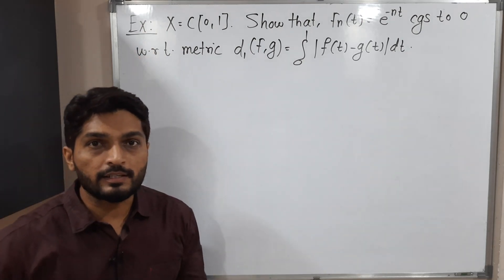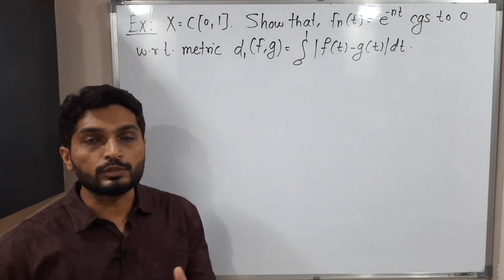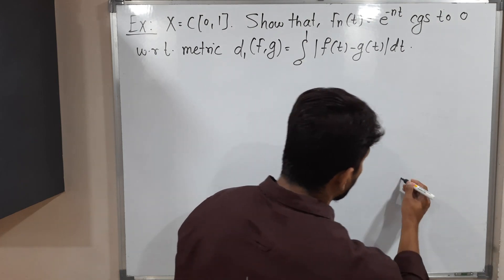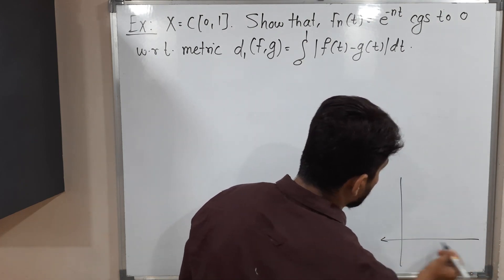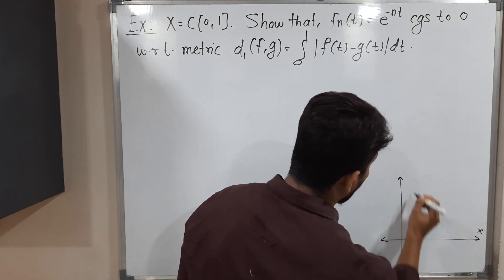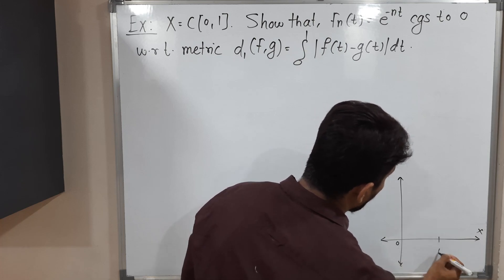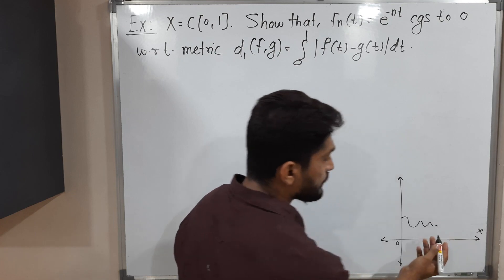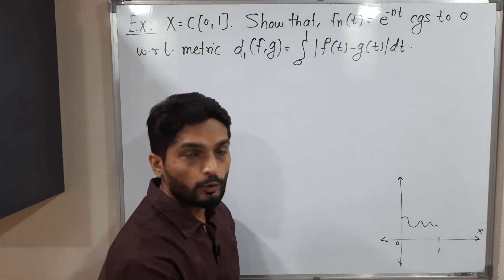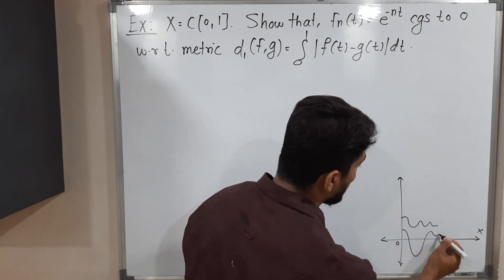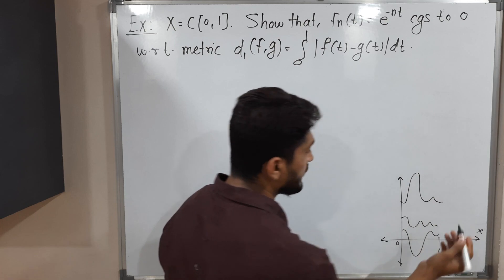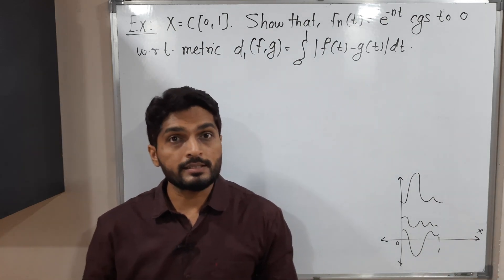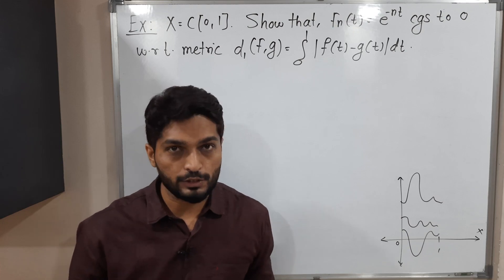We have X, defined as C closed interval [0,1]. That means it is a set of all continuous functions. This is the Y axis, this is the X axis. We have a closed interval [0,1]. You can easily see this is a continuous function defined on the closed interval [0,1]. This is also a continuous function. This is also a continuous function defined on the closed interval [0,1]. So X is a set of all such functions.